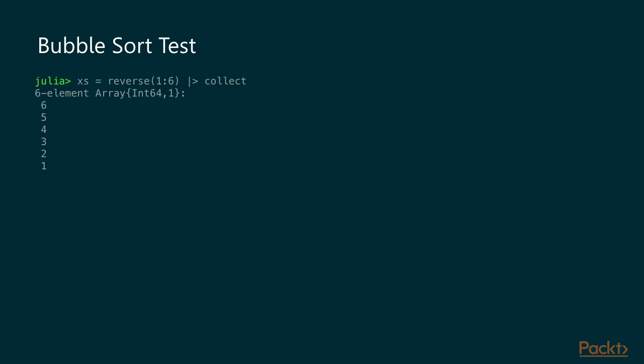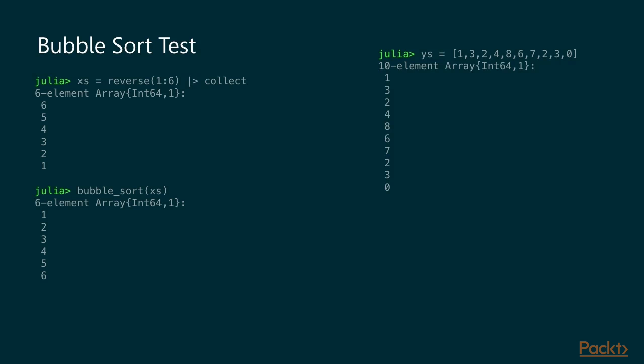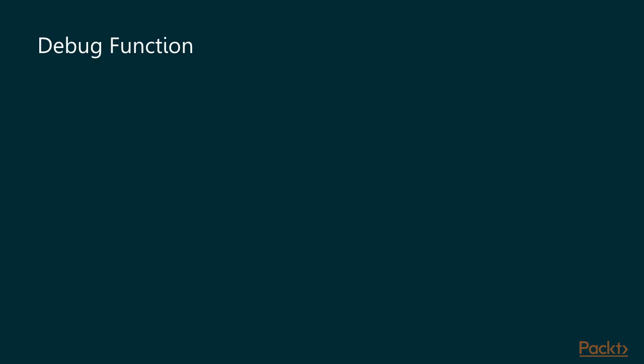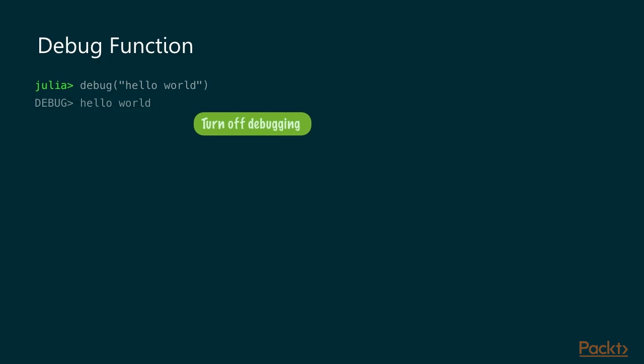Let's test our bubble sort. We have an array in descending order and want it ascending, and bubble sort gives us that. We also have some random data in `ys` and bubble sort puts it in the right order. For printf/logging-based debugging, we want a function that outputs something with a clear marker — like text in big letters — describing what that line is for, making it easy to search in a log file, and we want to be able to turn it on and off.